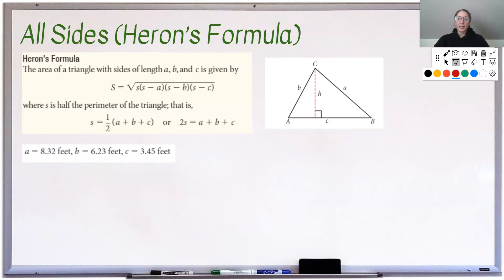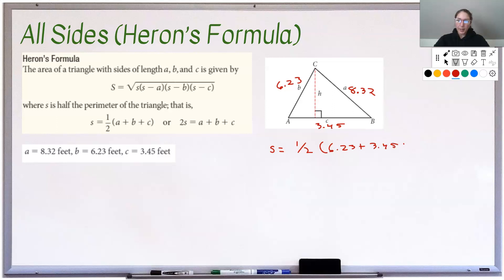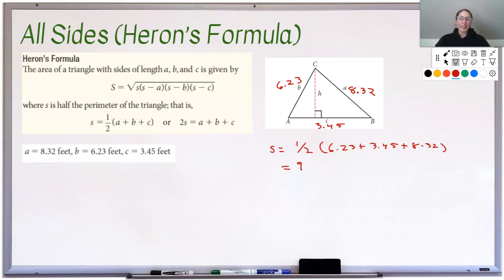Heron's formula states: area (big S) equals the square root of s(s−a)(s−b)(s−c), where little s is the semi-perimeter — add up all the sides and divide by two. In our example, a = 8.32, b = 6.23, and c = 3.45. So little s = 1/2 × (6.23 + 3.45 + 8.32), which comes out very conveniently to exactly 9.